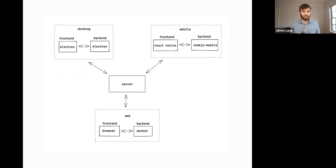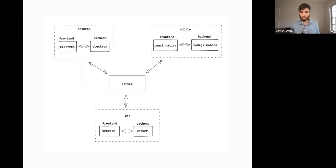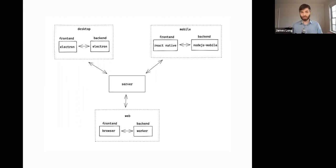Overall architecture: the desktop app uses Electron for the front end and back end. The mobile uses React Native for the front end, and then uses a project called Node.js Mobile to actually run a Node back end on the mobile device — it literally runs Node on the mobile. These back ends are literally the same back end compiled into one JavaScript file. The web uses a front end in the browser and the back end all runs in a worker. It uses sqlite.js — an Emscripten-compiled version of SQLite that runs all in memory.